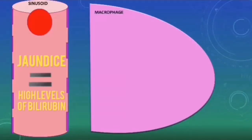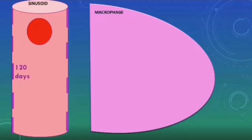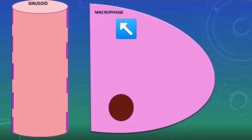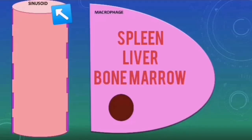Jaundice is characterized by high levels of bilirubin in the blood. Bilirubin is a breakdown product of red blood cells. Normally, after a period of around 120 days, the red blood cells will become defective and will be broken down by macrophages in areas such as the spleen, the liver, and the bone marrow. These are areas rich in sinusoidal capillaries, which are capillaries that have large intercellular clefts that allow red blood cells to leak out freely.